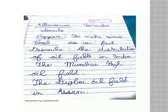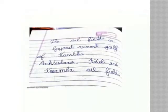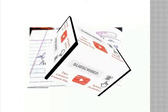Question 2: Describe the distribution of oil fields in India. The Mumbai High oil field. The Digboi oil field in Assam. The oil fields in Gujarat around the Gulf of Khambhat — Kalol and Kosamba oil fields.